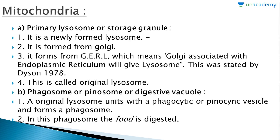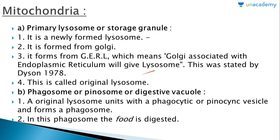The first kind is the primary lysosome or storage granule. It is a newly formed lysosome, formed from the Golgi body through the GERL — which stands for Golgi Associated Endoplasmic Reticulum giving rise to Lysosome. This was stated by Dyson in 1978. This is called the original lysosome.